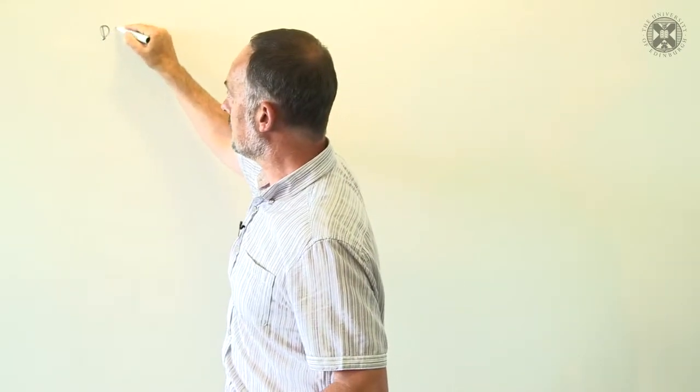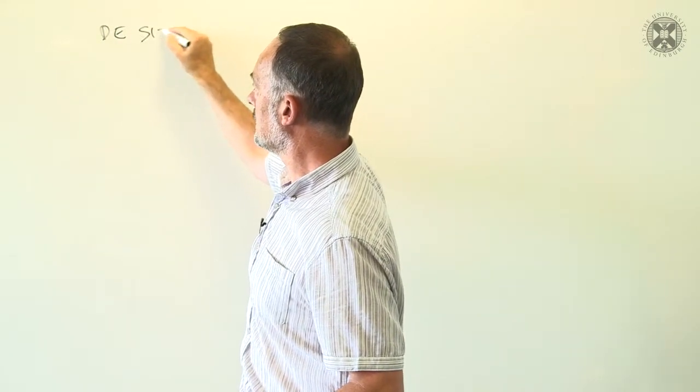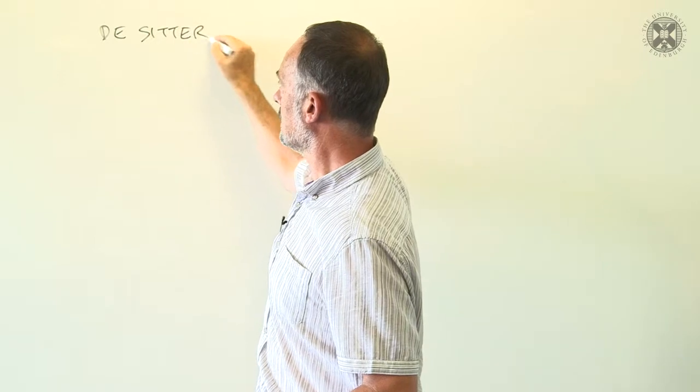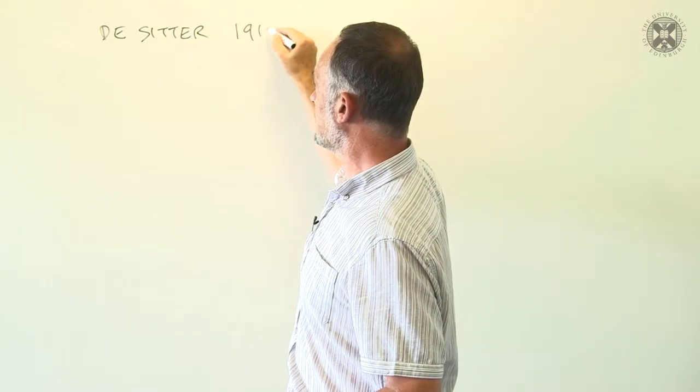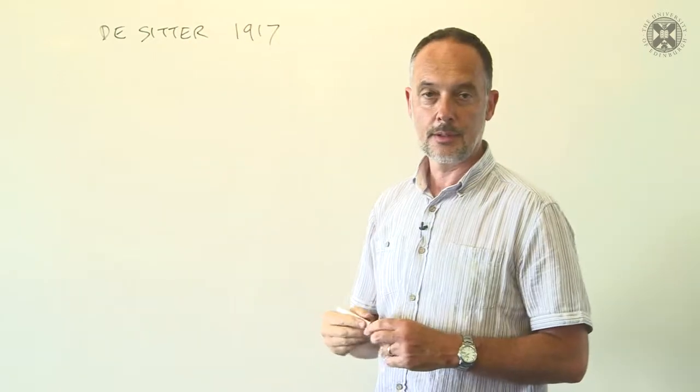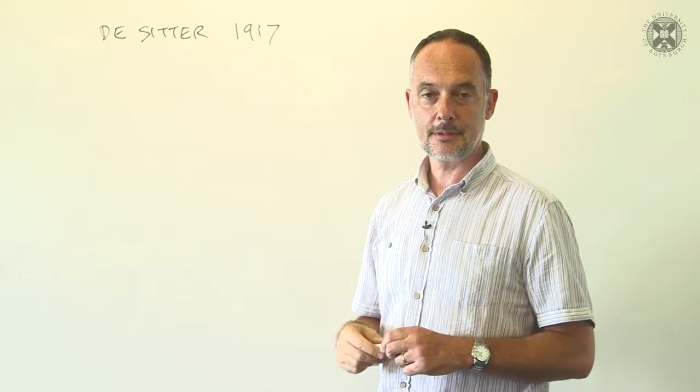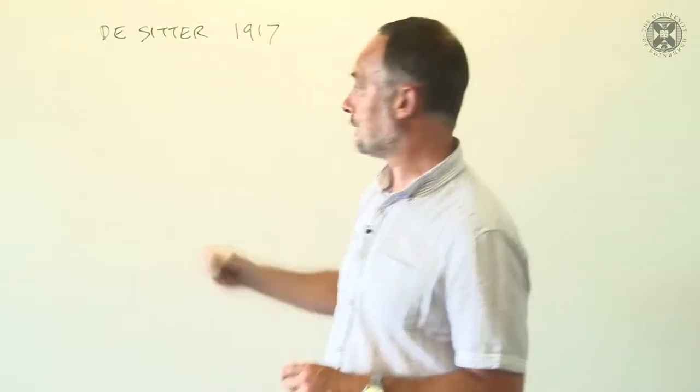So, armed with general relativity, theorists were able to explore cosmology. The first to do so was de Sitter in 1917. He produced a universe that contained only vacuum energy.